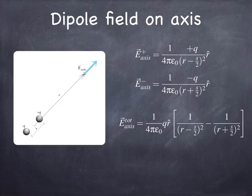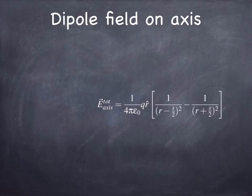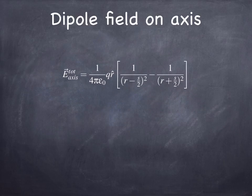And so we simply have to add these two fields together. And that's the answer right there. Now, that's an exact answer for a dipole made up of two charges separated by a distance s. But it's not a very satisfying answer because it's so darn complicated. So the question is, can we simplify it?